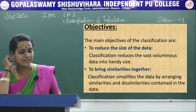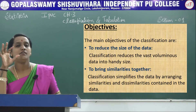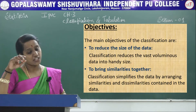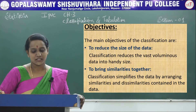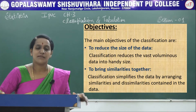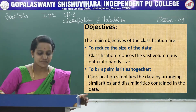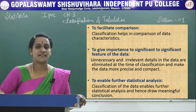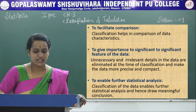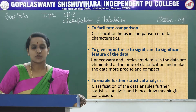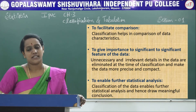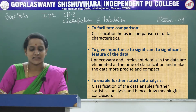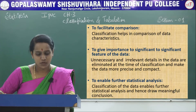Next, to bring similarities together — classification simplifies the data by arranging similarities and dissimilarities contained in the data. Similar items we group into one category and dissimilar items into another. To facilitate comparison helps in comparing data based on characteristics. To give importance to significant features of the data. To enable further statistical analysis — these are the five major objectives of classification.